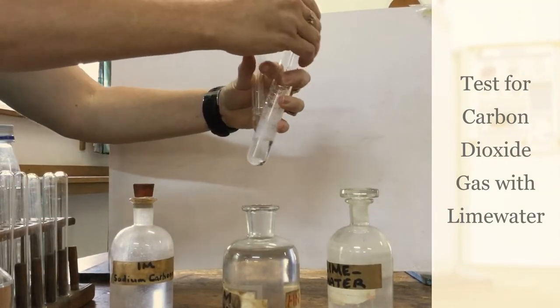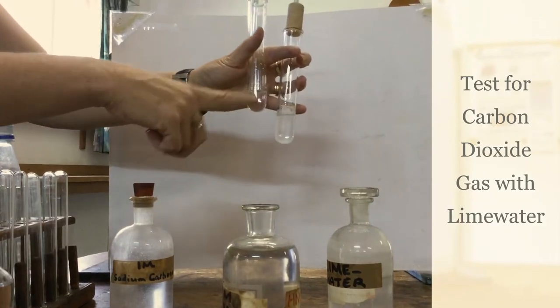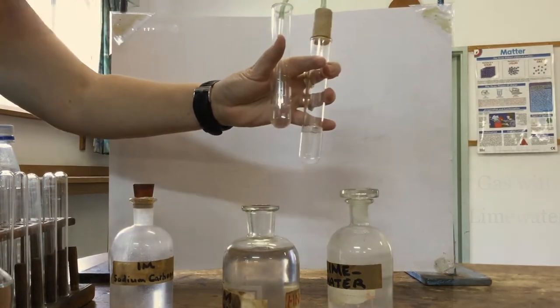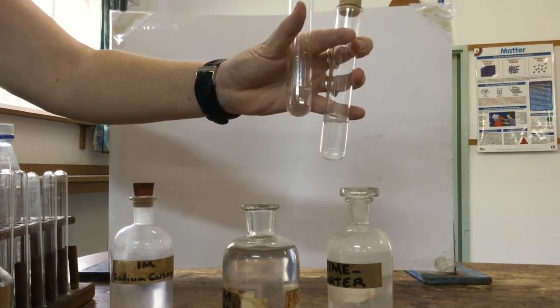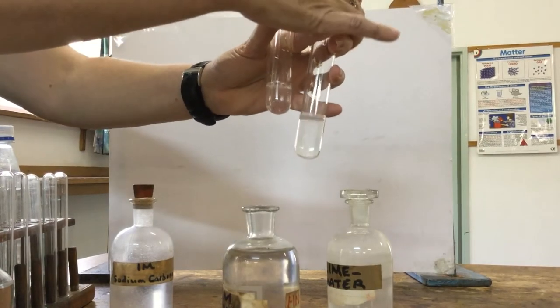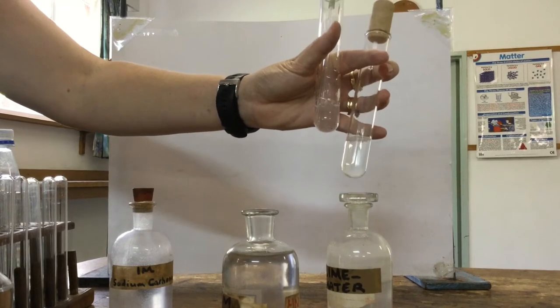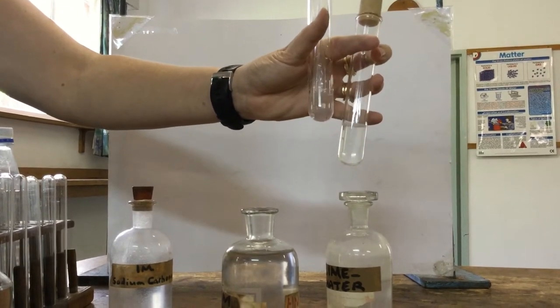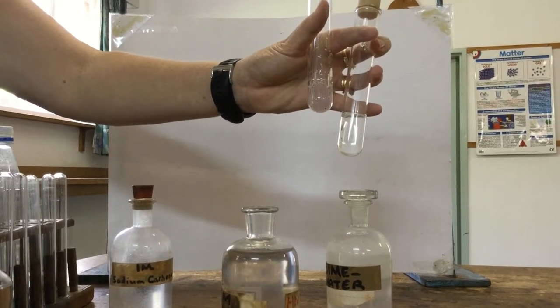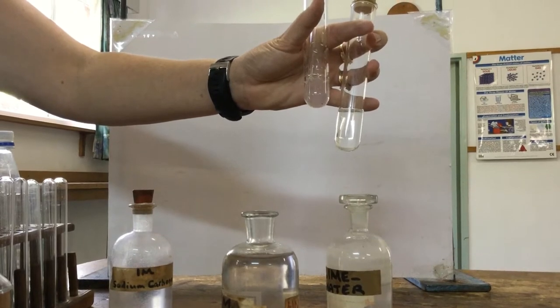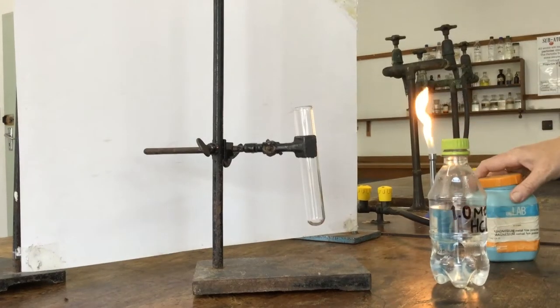We produce a whole lot of bubbles and we're bubbling that through the lime water. If we produce enough bubbles, we should find the lime water start to turn a milky white color. And we will see that it is carbon dioxide being produced.